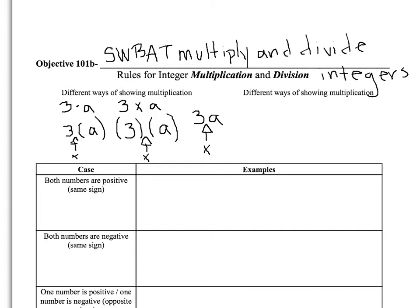Some different ways you might see division: you might see something like 5 ÷ A, which we're used to. You could also see it represented as a fraction — 5 over A — which also means division, so keep in mind that the fraction bar means to divide. You might also see 5 slash A, which is another way of writing a fraction using a forward slash.